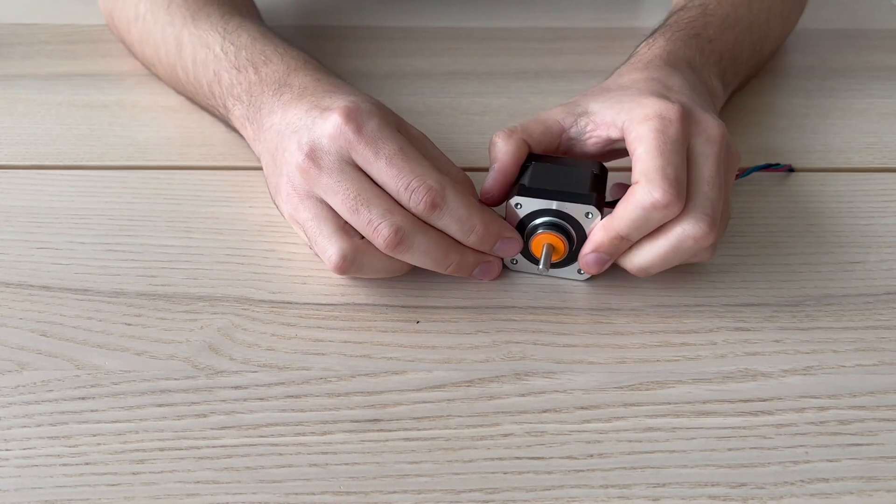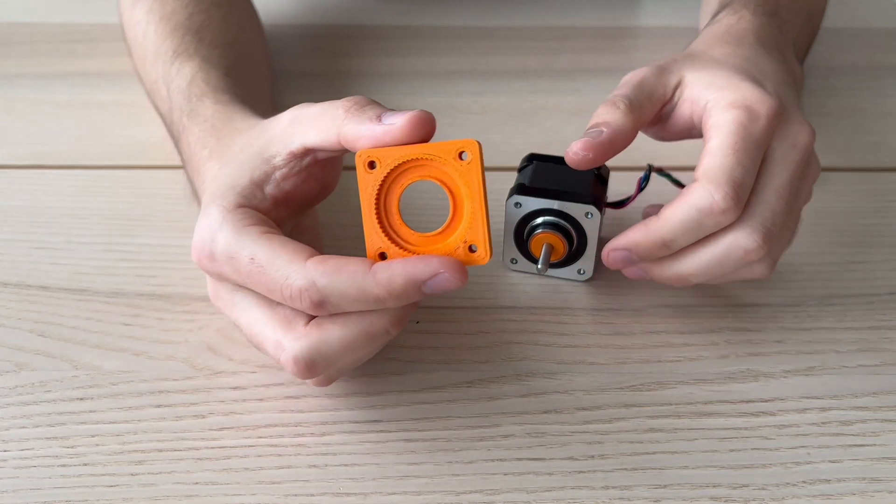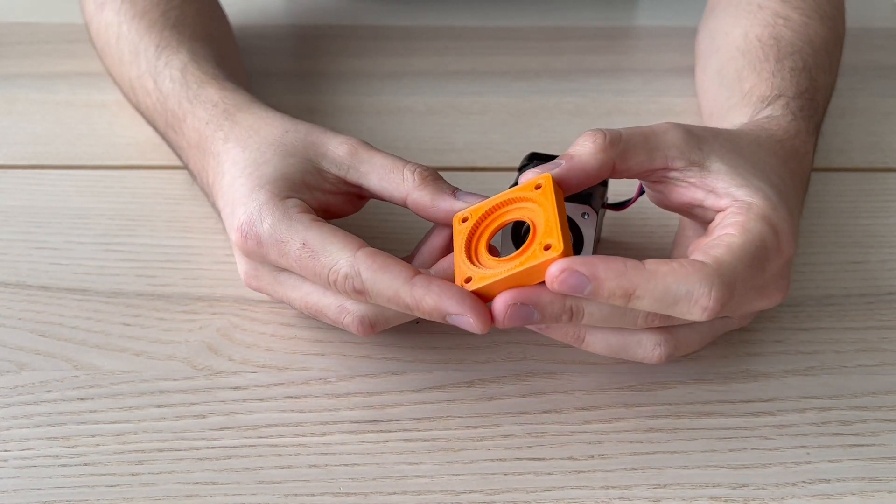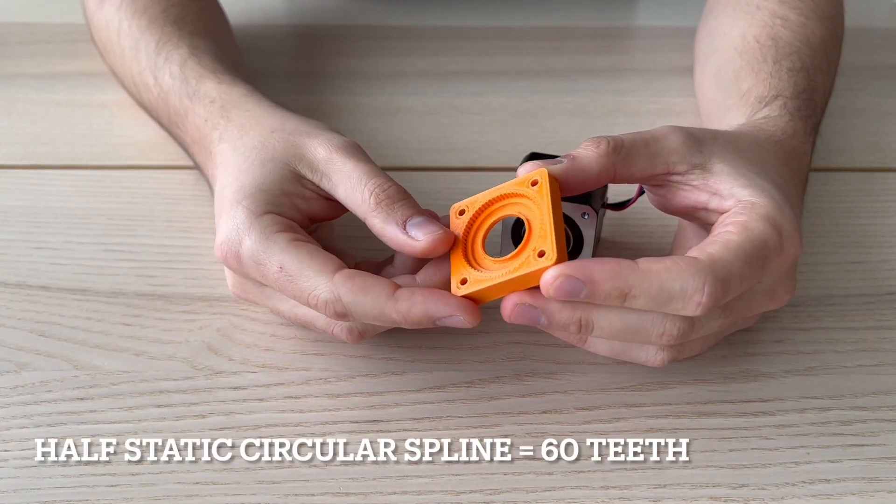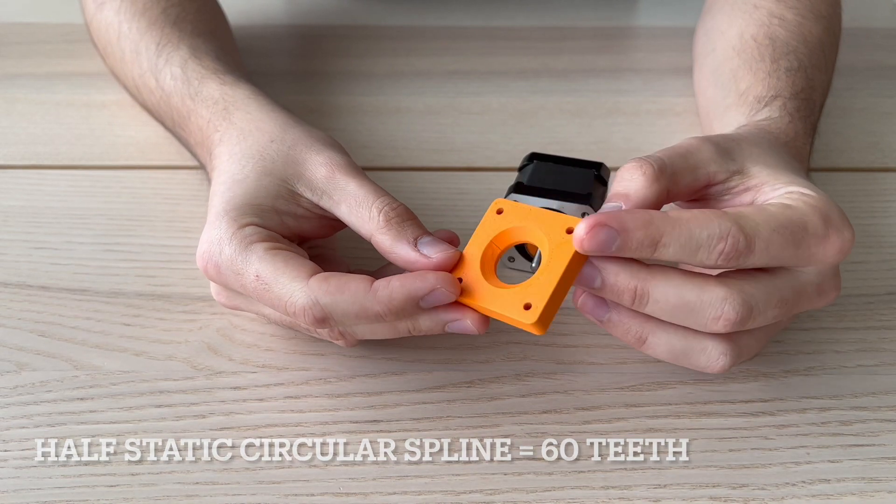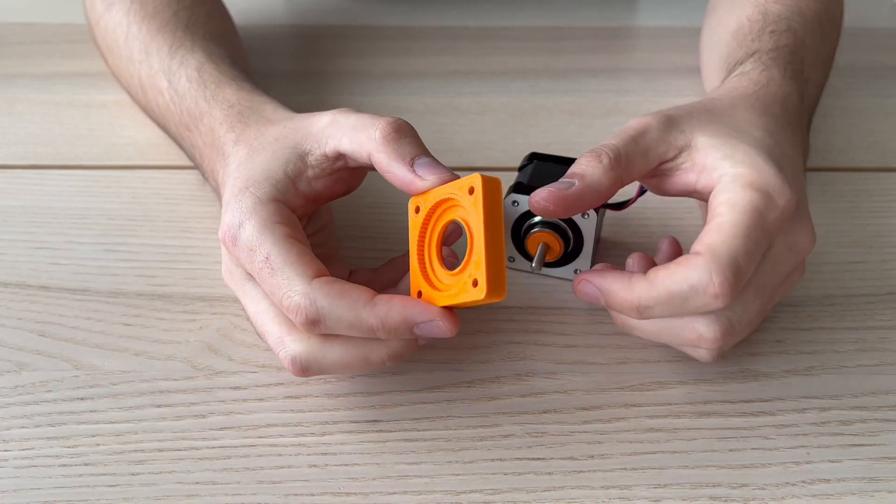Next part we need to add is half static circular spline. This half circular spline has 60 teeth and it will be attached to the static motor frame.